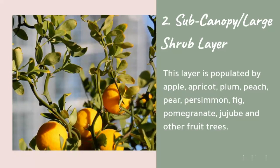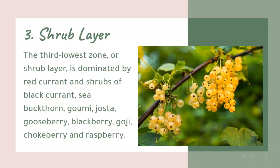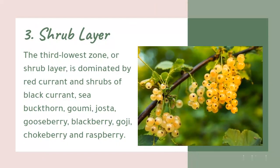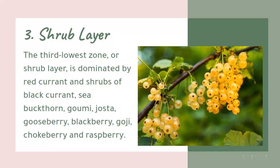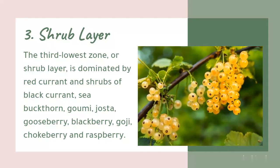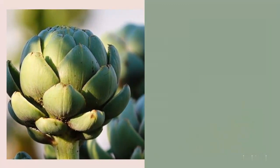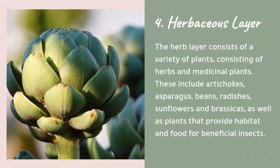Layer 3: Shrub layer. The shrub layer is dominated by red currant and shrubs of black currant, sea buckthorn, galmi, josta, gooseberry, blackberry, goji, chokeberry, and raspberry.